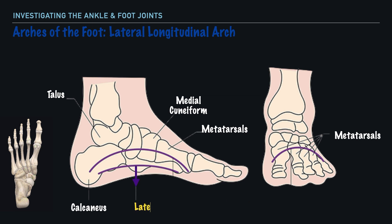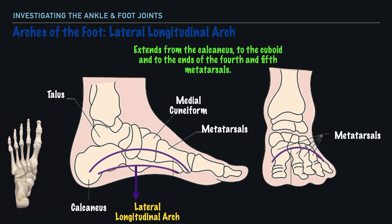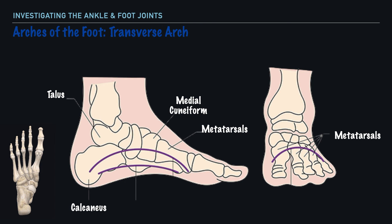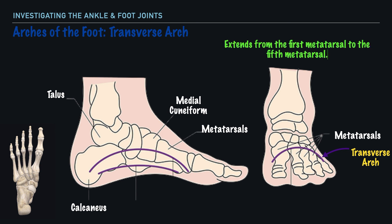Next, we have the lateral longitudinal arch, which by the name informs us that this arch is on the lateral aspect of the foot, and this particular arch extends from the calcaneus to the cuboid and to the ends of the fourth and fifth metatarsals. And lastly, we have the transverse arch, and it's this arch that extends from the first metatarsal to the fifth metatarsal. This arch is further supported by the complex network of muscles within the foot, which you'll oftentimes hear referred to as the intrinsic musculature of the foot.